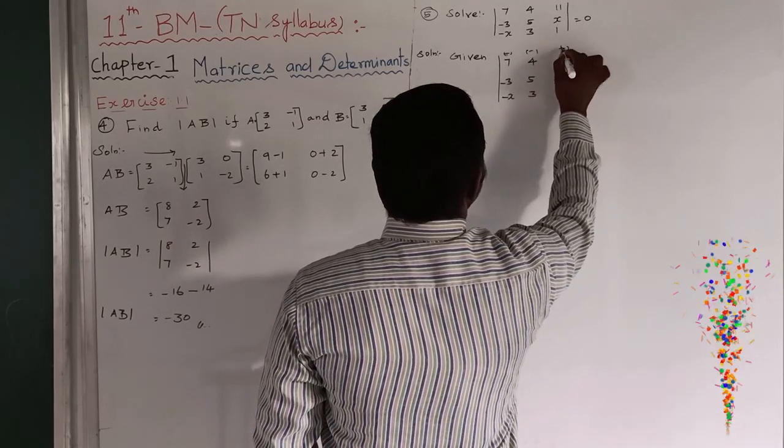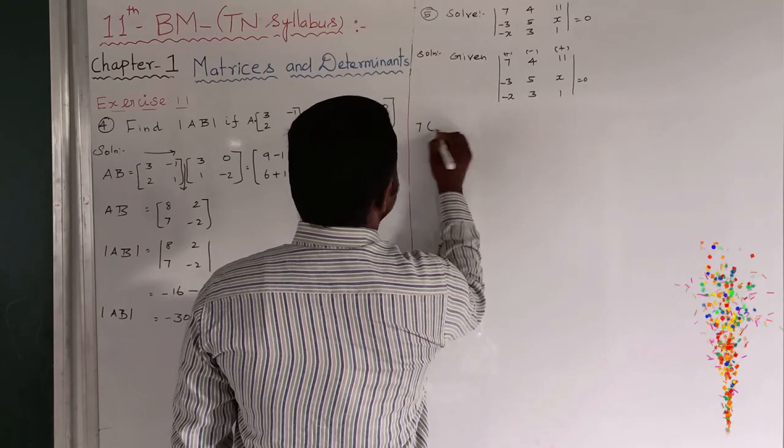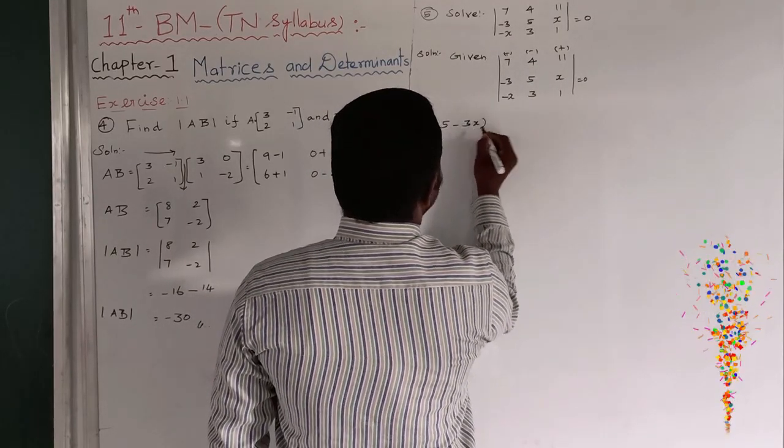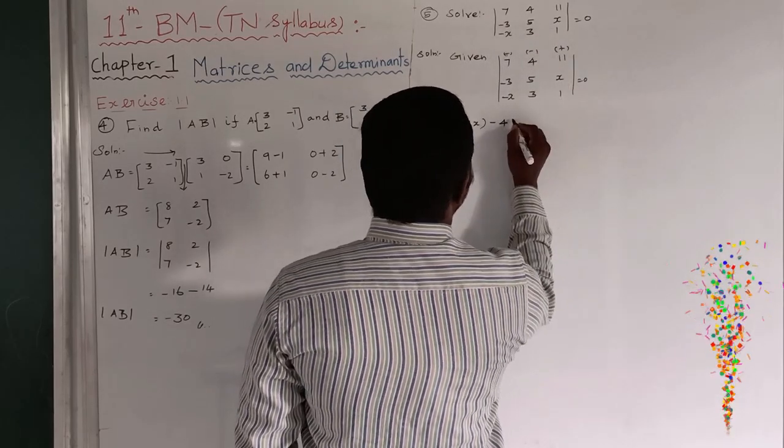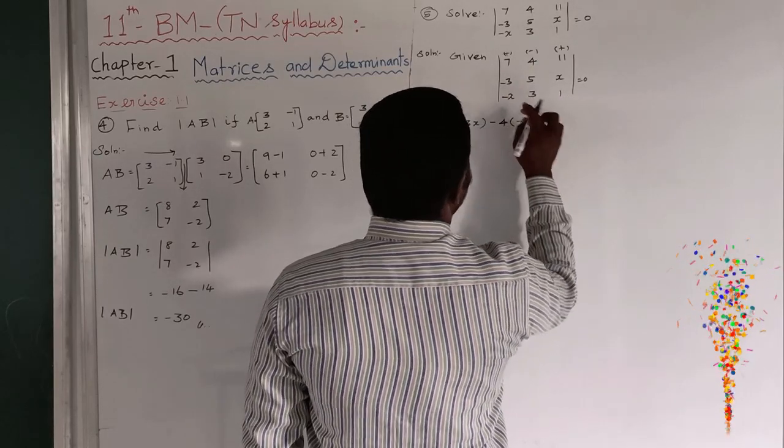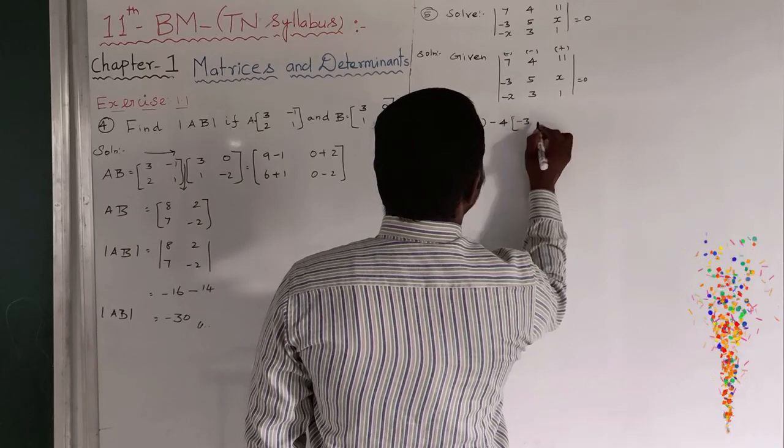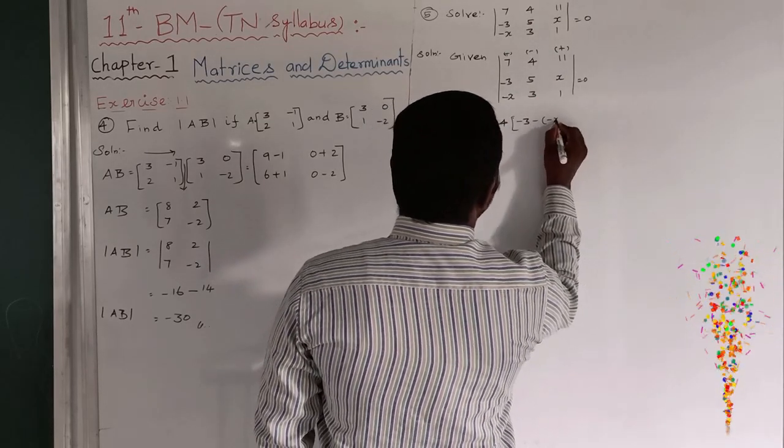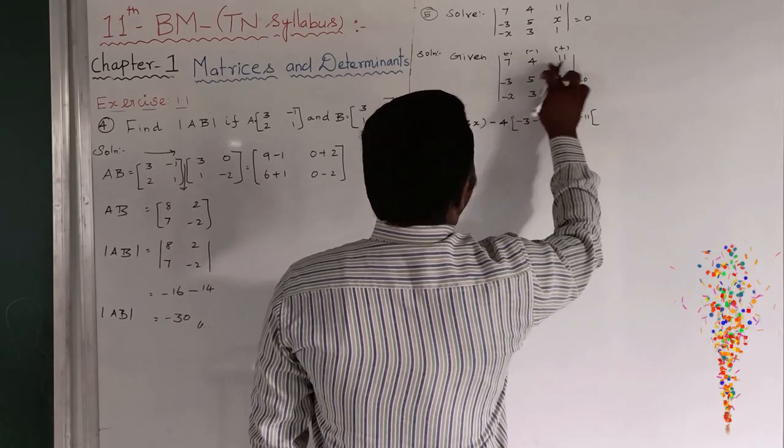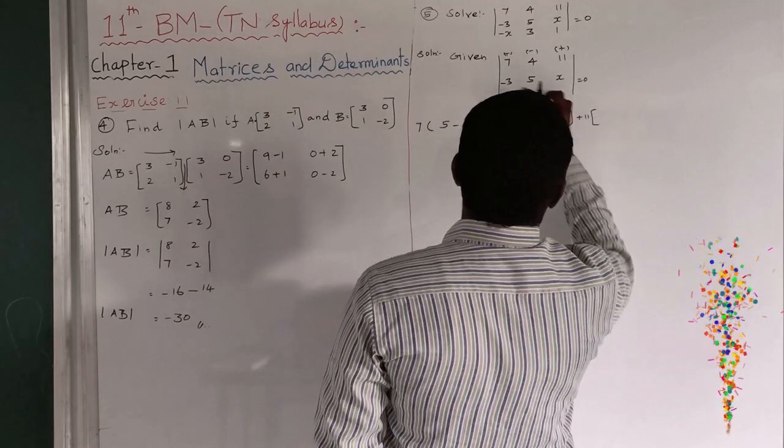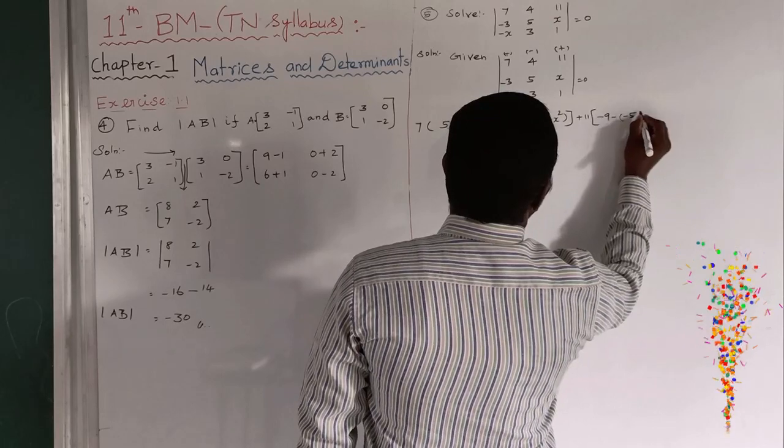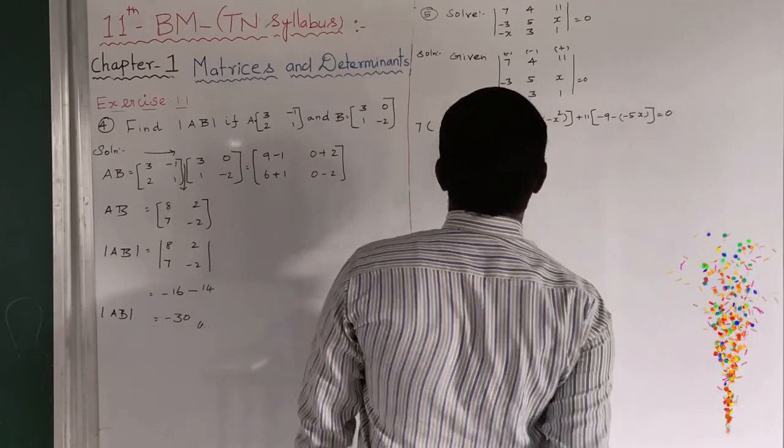It is plus minus. It is plus. So, 7 into, first row, first column. 5, 1 is 5. Minus 3X. And X1 is plus into minus. Minus 4, row and column. Minus 3. Already, we should have what is that? 1 minus. Minus of. Minus into minus. Minus X squared. The next one is plus 11. First row and third column will be removed. Minus 9. Minus 5X. This product is minus 5X. This is equal to 0.